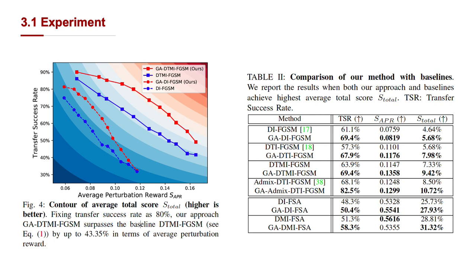We present the contour plot of average total score in Figure 4. When fixing average perturbation reward as 0.1 or 0.2, our approach GA-DTMI surpasses the baseline DTMI by up to 81%. In terms of transfer success rate, as shown in Table 2, our approach has a significant performance boost on the average total score across various threat models, especially in the L-infinity norm setting where both the transfer success rate and the average perturbation reward are improved.